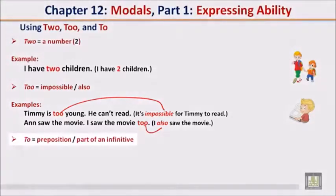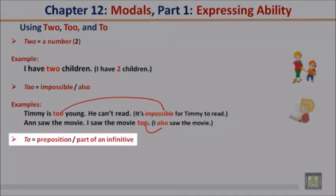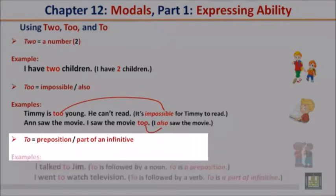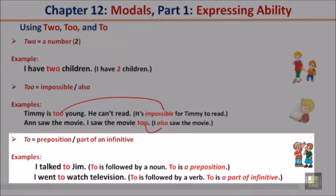To equals a preposition or part of an infinitive. I talked to Jim — 'to' is followed by a noun, which is Jim, so 'to' is a preposition in this example. I went to watch television — 'to' is followed by a verb, so 'to' is part of an infinitive.